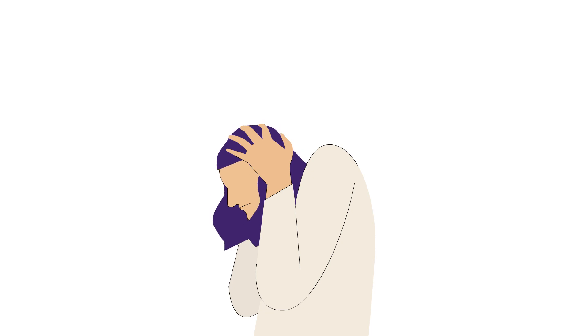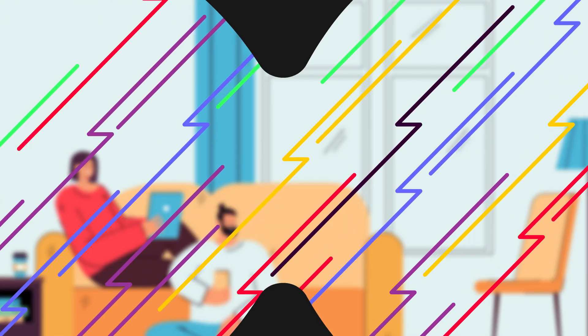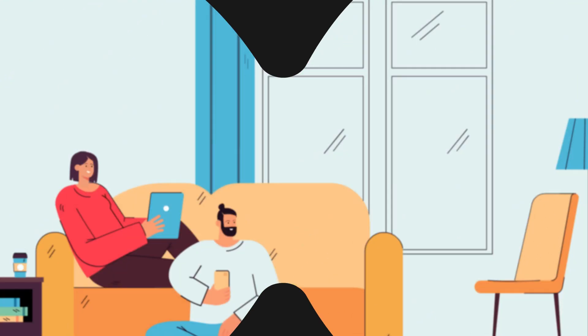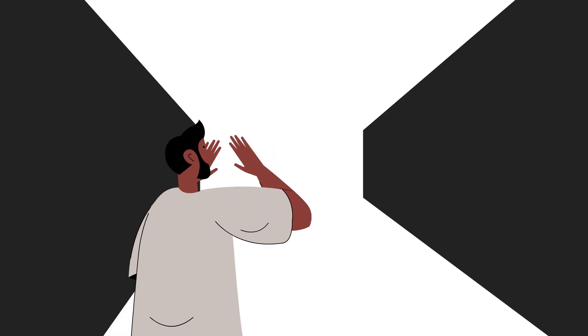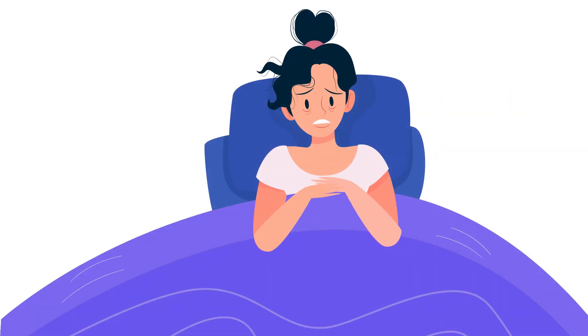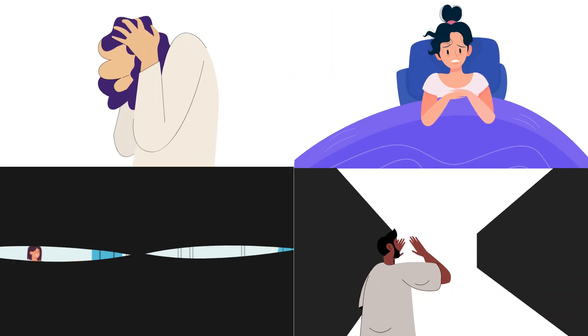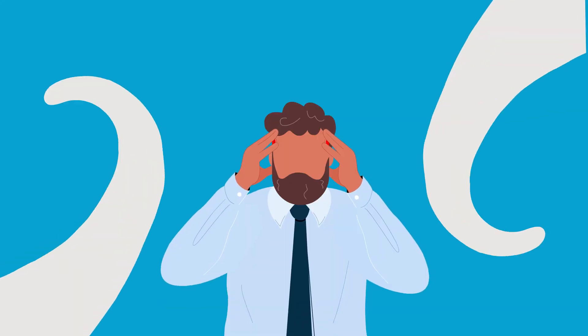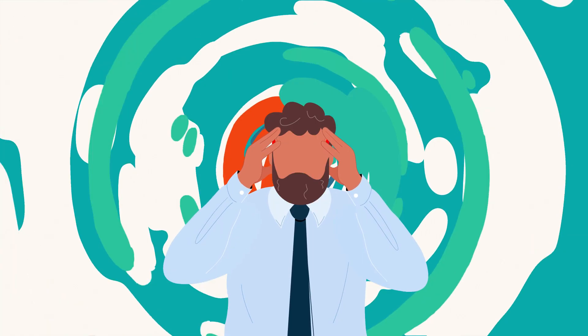A throbbing, pounding headache, blurry vision, bright zigzag lines across your range of vision, sensitivity to light, fatigue, sleep disturbances—migraine can have all these symptoms. While a severe headache is one of the most common symptoms of migraine, it does not really capture the multiple experiences a migraine can entail.